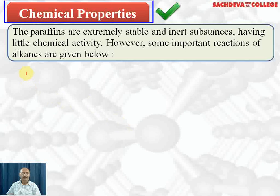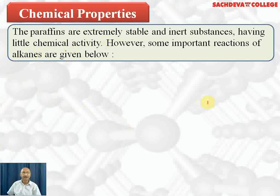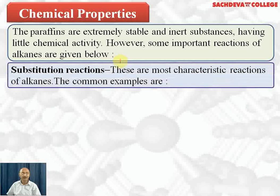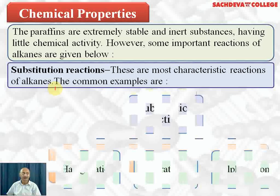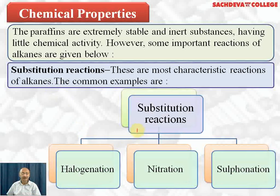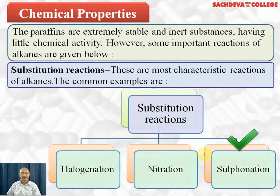Chemical properties: alkanes or paraffins are extremely stable and inert substances having little chemical reactivity. Some important reactions include substitution reactions, which are the most characteristic reactions of alkanes. When a hydrogen atom of a hydrocarbon is replaced by another atom or group of atoms, these are called substitution reactions. In alkanes, substitution reactions can be of three types: halogenation, nitration, and sulfonation.